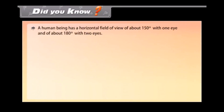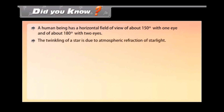Did you know: a human being has a horizontal field of view of about 150 degrees with one eye and about 180 degrees with two eyes. The twinkling of a star is due to atmospheric refraction of starlight.